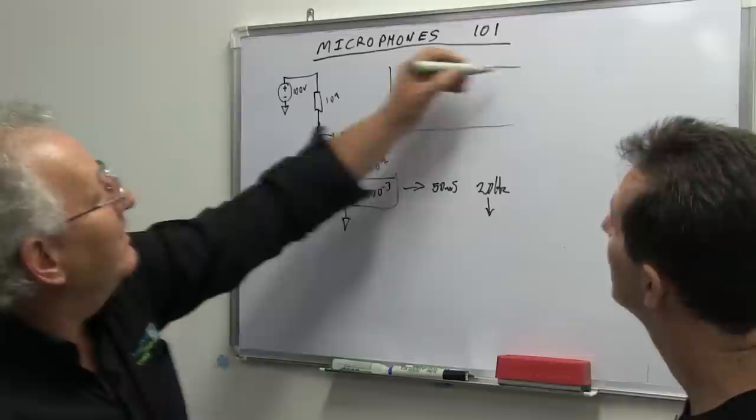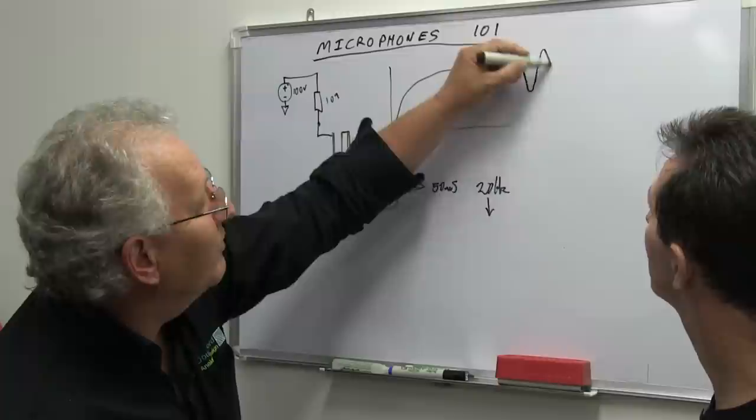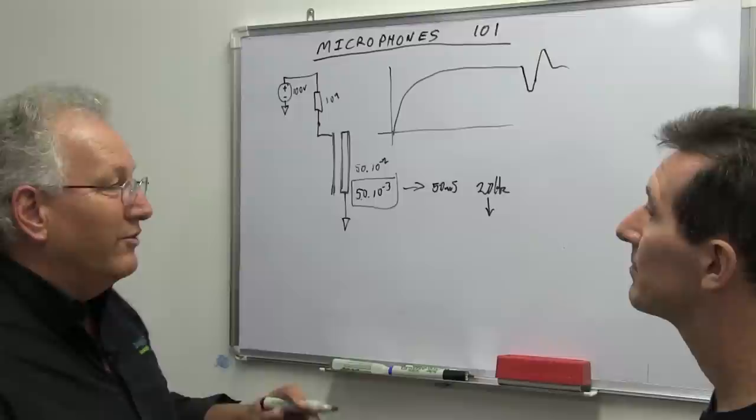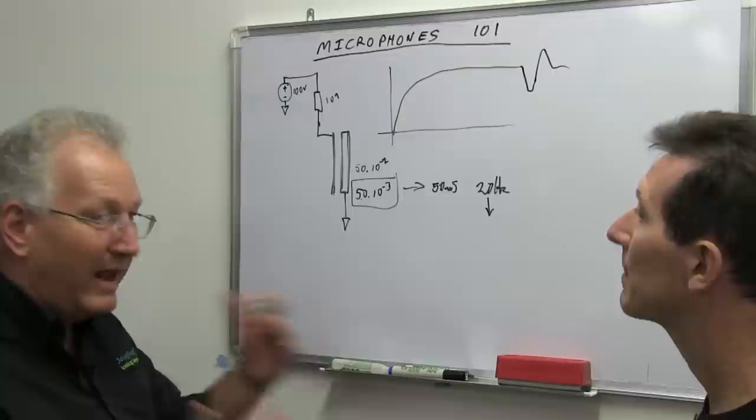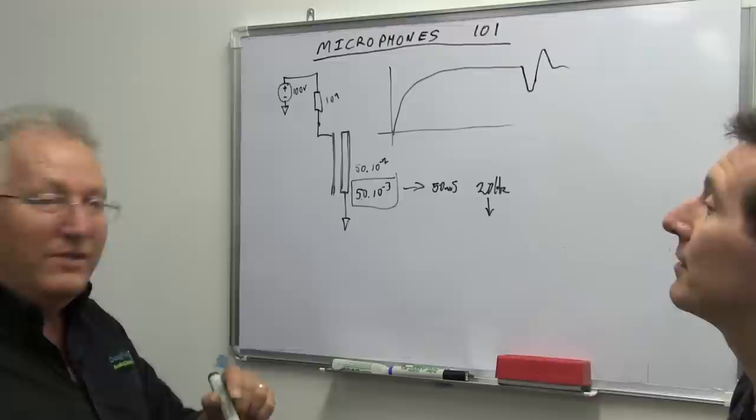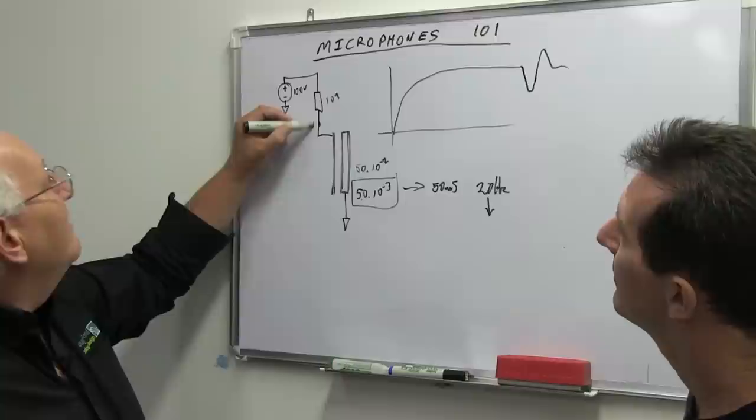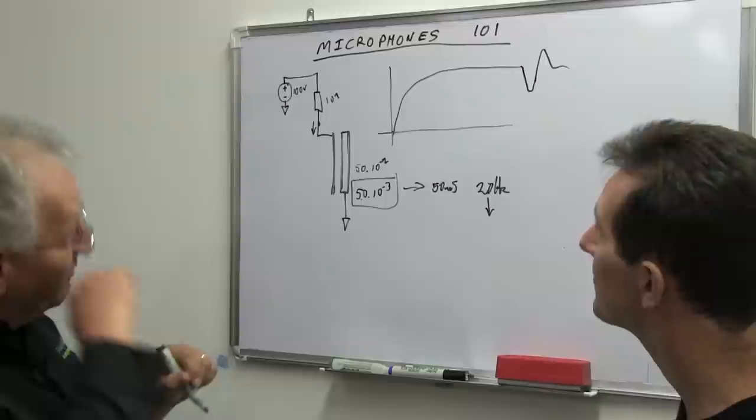If we get a pressure wave coming in there, the voltage will go negative. If we have a rarefaction, the voltage will increase above the bias level. And those are the voltages that we're interested in gathering and amplifying as those AC voltages. They correspond to audio.